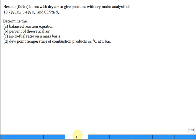Hexane C6H14 burns with dry air to give products with a dry molar analysis of 10.7% CO2, 5.4% O2, and 83.9% N2. For the first part, give me the balanced reaction equation.